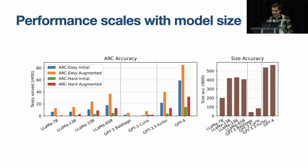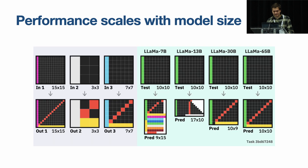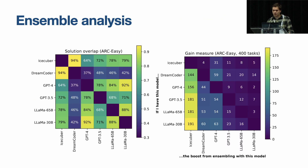Performance scales quite well with model size. GPT-4 was able to solve 15% of ARC tasks across the board, which is slightly better than Dreamcoder. We can see scaling helps quite consistently — as parameter count increases, number of errors decreases — and small models struggle to output a grid at all. These white squares on the left are where it's got the grid size wrong. But LLAMA 65B finally gets the correct answer. In an ensemble analysis, it's interesting to see that different DSL-based methods tend to work well on similar tasks, but LLMs are quite good at a very different set of tasks — there's only a 37% overlap between Dreamcoder and GPT-4 — and as a result, ensembling would help quite a lot.